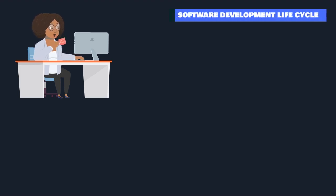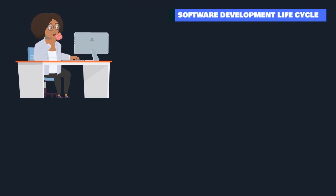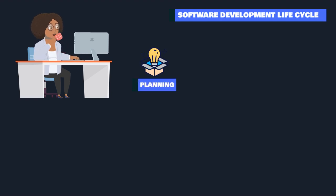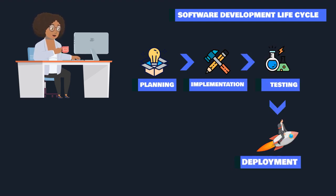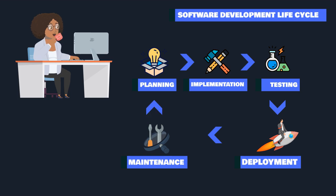Now let's shift our focus to the software development lifecycle. This cycle guides us through the stages of creating software, from gathering requirements to deployment and maintenance. The phases include understanding the significance of requirements, design, implementation, testing, deployment, and maintenance. Learning the process will help you understand how software products are delivered.